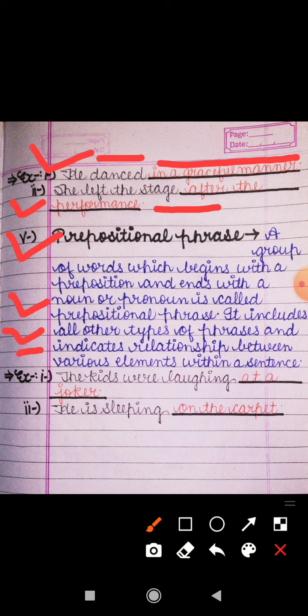A prepositional phrase shows the relationship between different elements of a sentence. For example: 'The kids were laughing at a joker' — 'at a joker' is the prepositional phrase, starting with the preposition 'at' and ending with the noun 'joker.' Another example: 'He is sleeping on the carpet' — 'on the carpet' is the prepositional phrase, showing where he is sleeping.